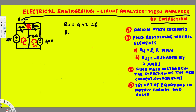For R22 we look at the resistances in the second mesh: two ohms and eight ohms, so two plus eight equals ten. For R33 we look at the third mesh and add all resistances: four ohms, six ohms, and eight ohms, so four plus six plus eight equals eighteen.